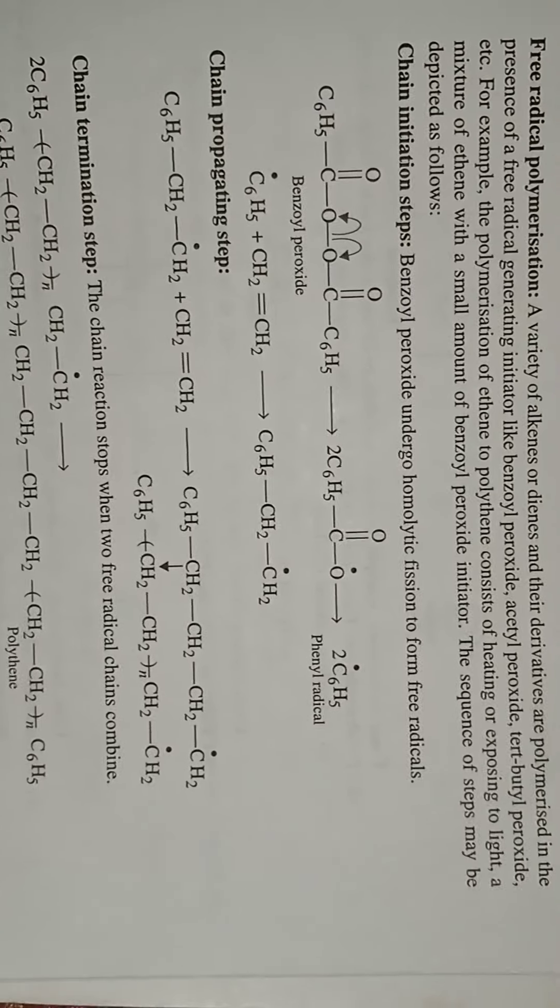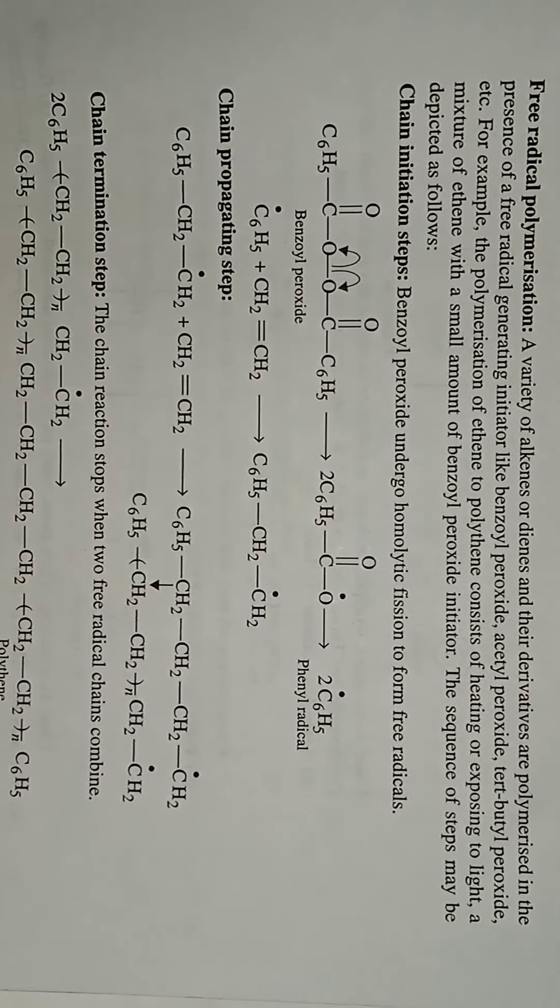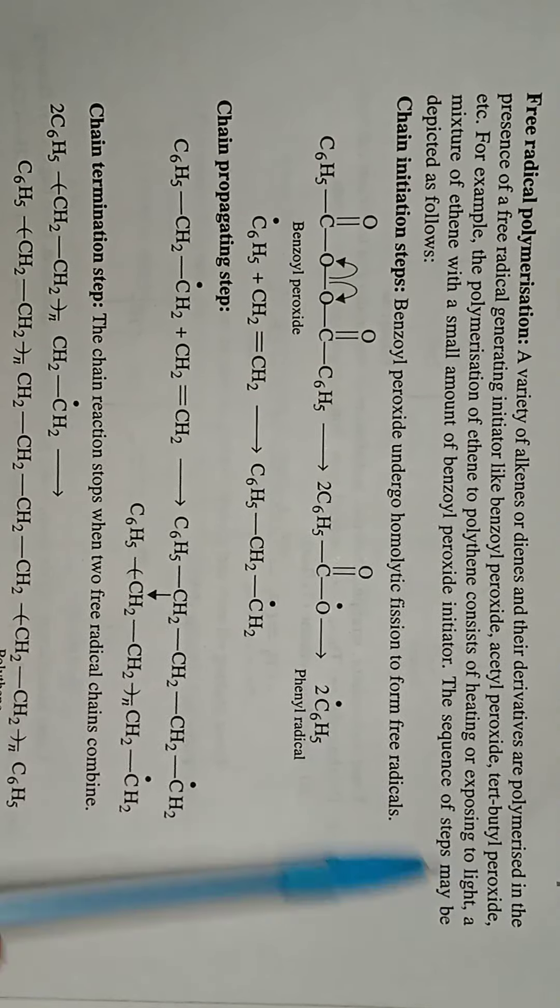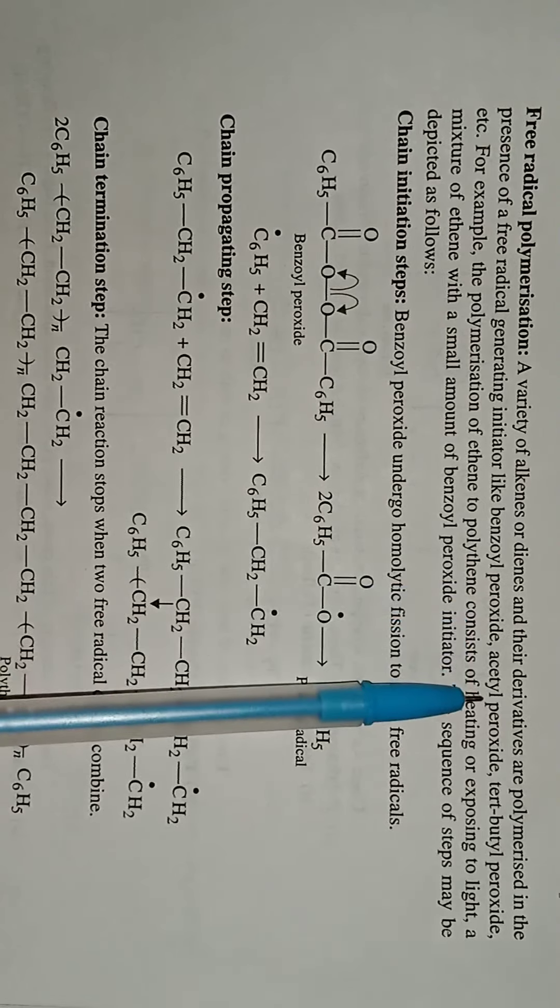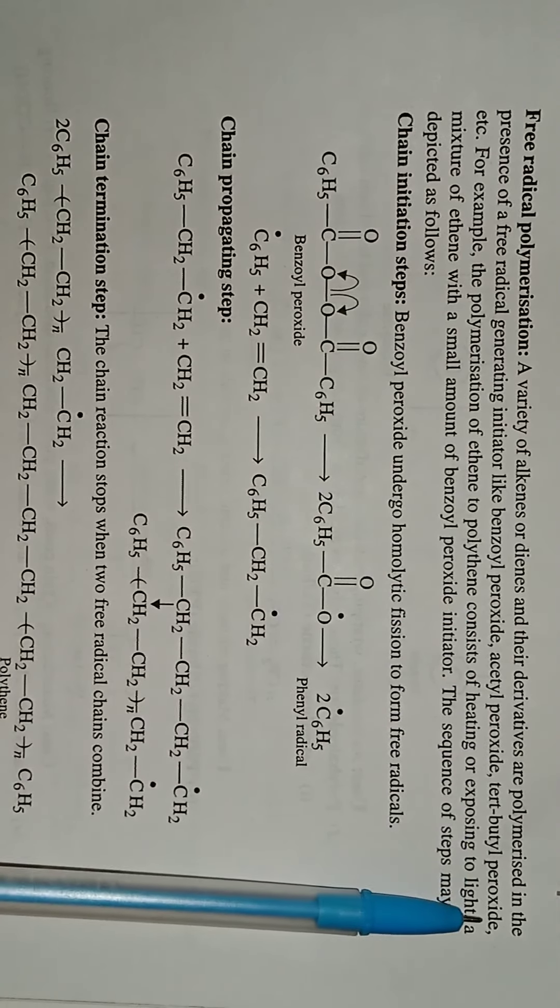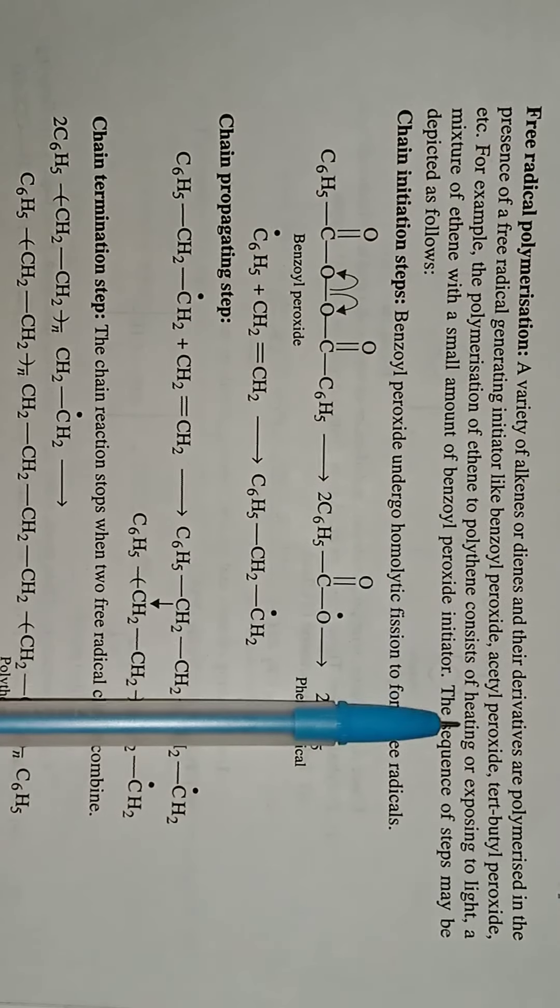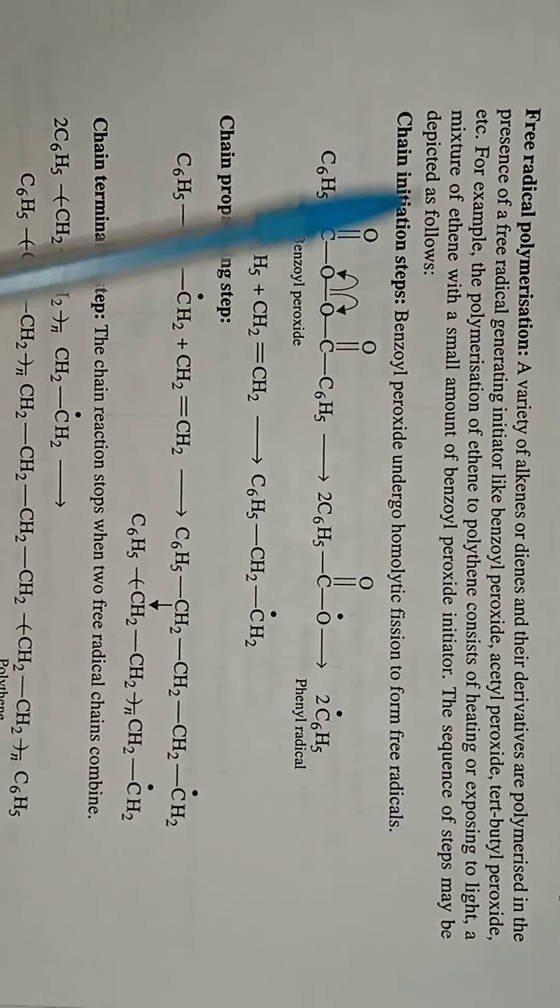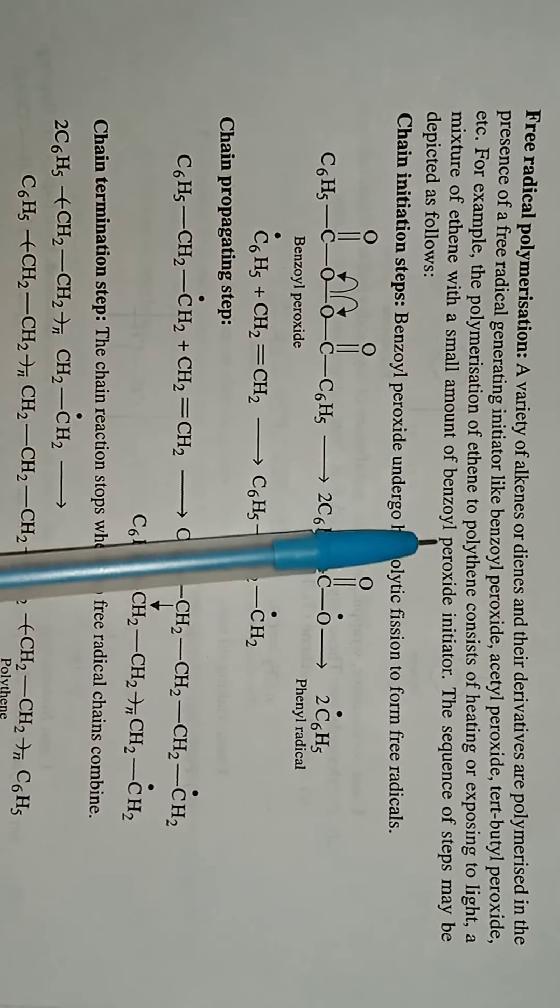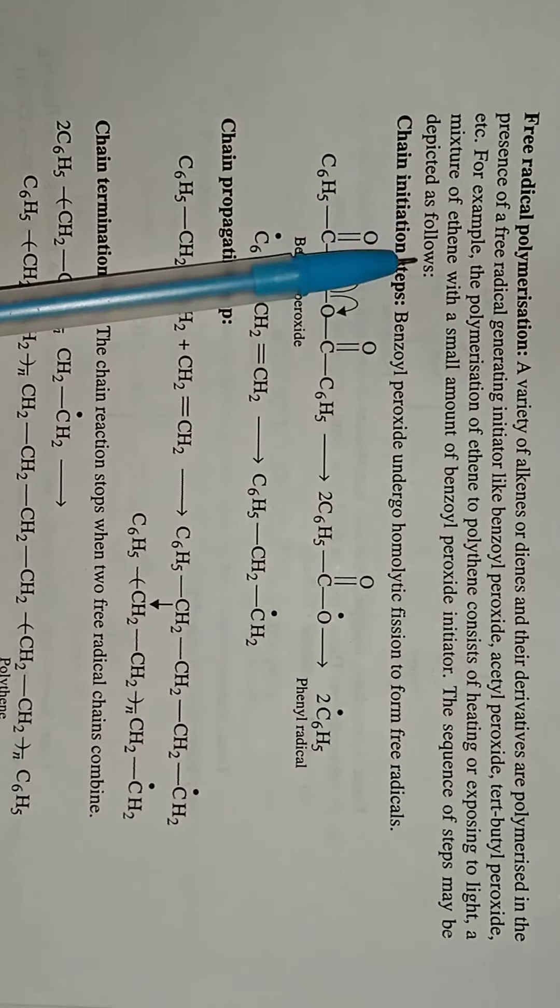A variety of alkenes, dienes, and their derivatives are polymerized in the presence of free radical generating initiators such as benzoyl peroxide, acetyl peroxide, and tert-butyl peroxide. For example, the polymerization of ethene into polythene. By heating and exposing a mixture of ethene with a small amount of benzoyl peroxide initiator to light, the sequence of steps may be depicted as follows.